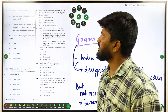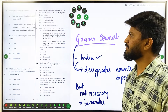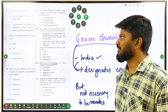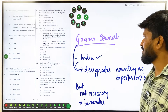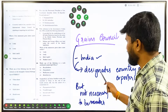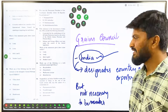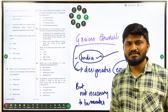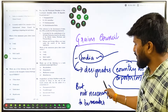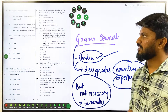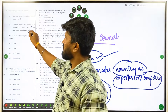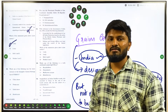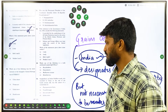There is also an international relations and environment question about the International Grains Council. Statement 1: India is a member of the International Grains Council — this is correct. Statement 2: a country needs to be a member to export or import rice and wheat — this is wrong. The Grains Council designates countries as exporters or importers based on their trade balance, but membership is not required for exporting or importing rice and wheat. You can use common sense: many countries trade wheat and rice without belonging to such a council.